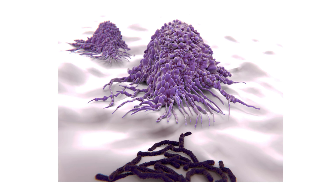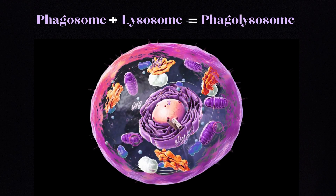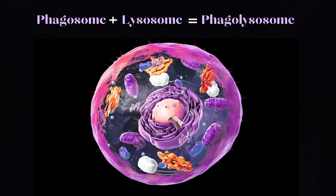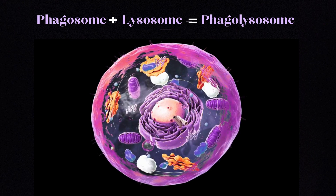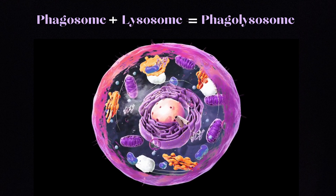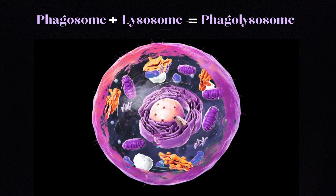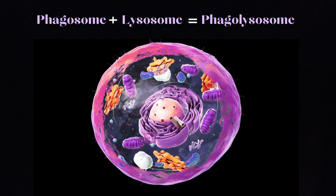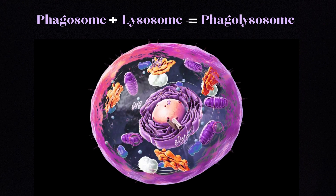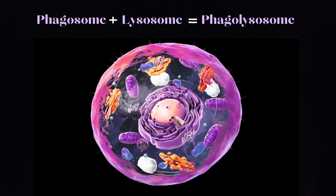Setting NADPH oxidase aside for now, this is a good time to quickly review phagocytosis. The major professional phagocytes include neutrophils and macrophages, which mature from monocytes. Other phagocytes include B cells, dendritic cells, mast cells, and eosinophils according to our AACP study guide. Inside the phagocyte are tiny organelles called phagosomes, which engulf and encapsulate the bacteria and combine with a lysosome, forming a phagolysosome.